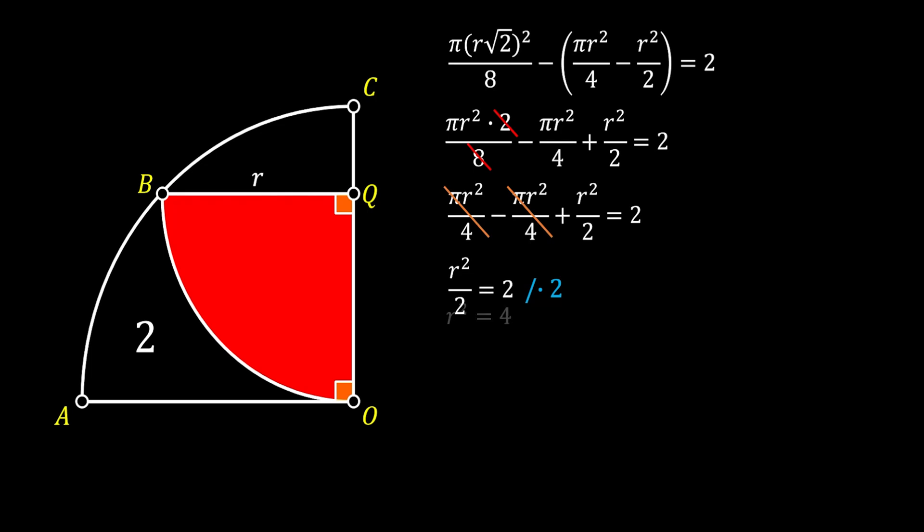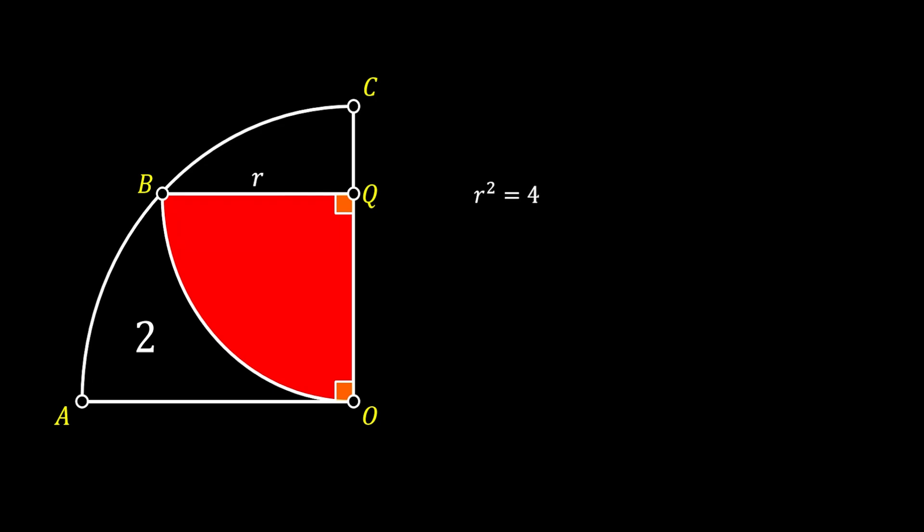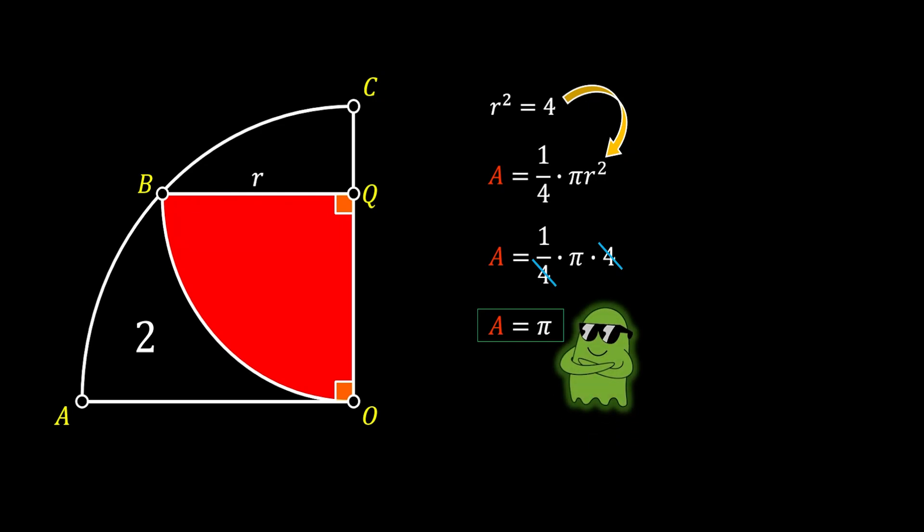Of course, we can multiply everything with 2 and get that r squared is equal to 4. Now remember, we are looking for the area of our inner quarter circle. And the area of the quarter circle equals 1 fourth of the area of the full circle pi r squared. Now we are just going to substitute the value of r squared and we will get the following. After simplifying, we will get that the area of our red quarter circle equals to pi and this is our beautiful solution.